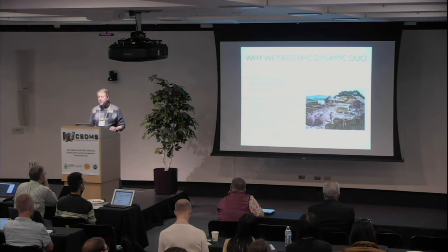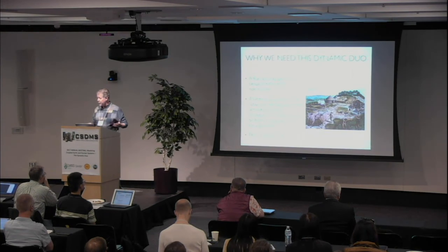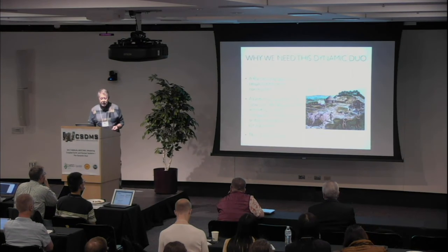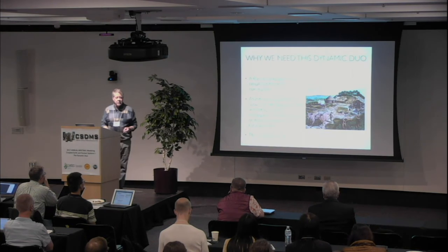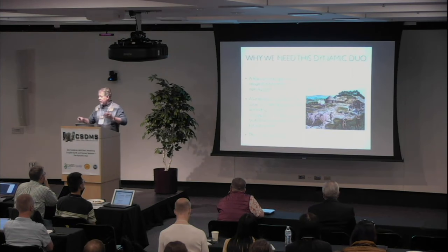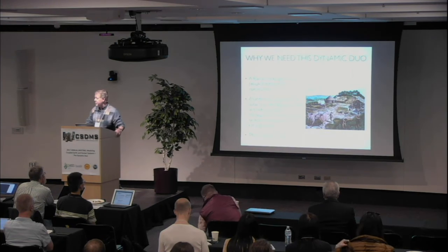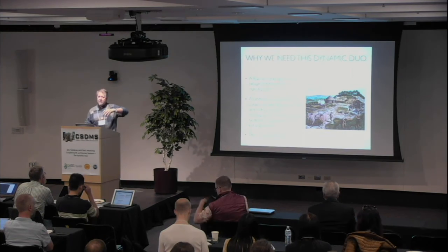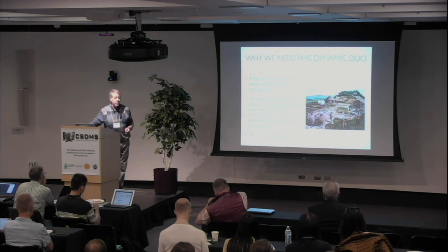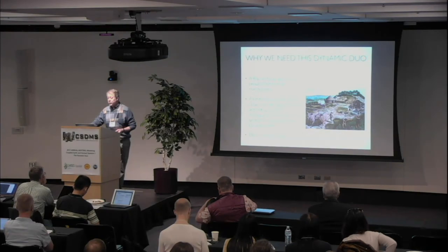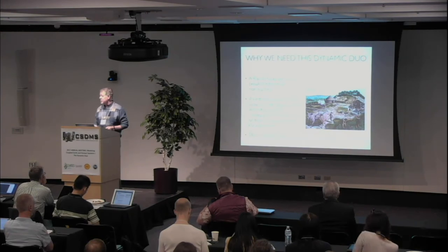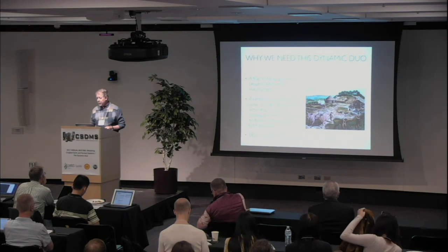Up until even a few centuries ago—and a few centuries is a really short time for a historical scientist like me—people lived in small communities. Any of us, if we lived in one of those communities, could observe the social and natural phenomena around us. We could figure out what the consequences of our actions would be for our social world and for the natural world in which we lived. That's not the way it is anymore.